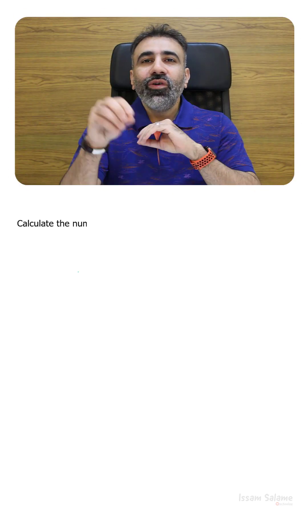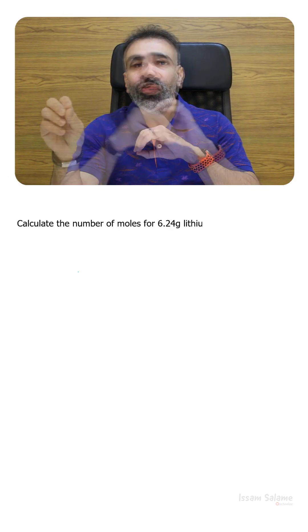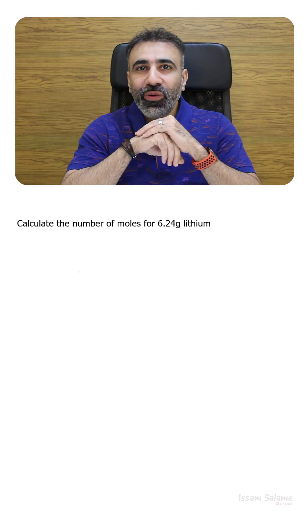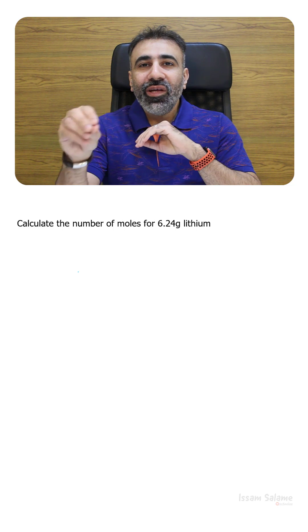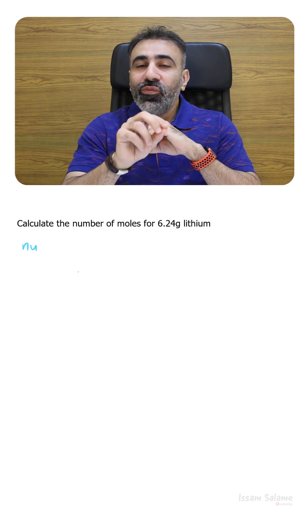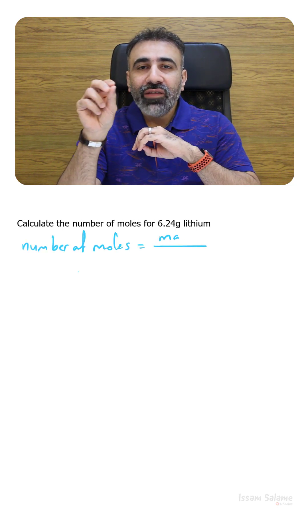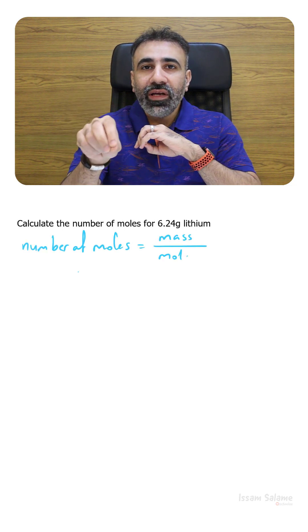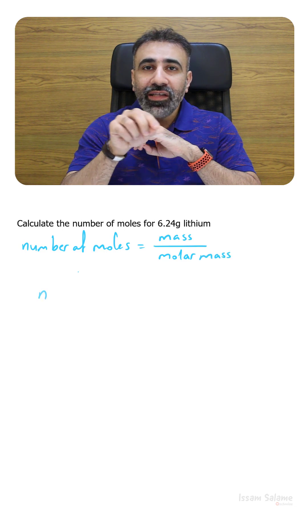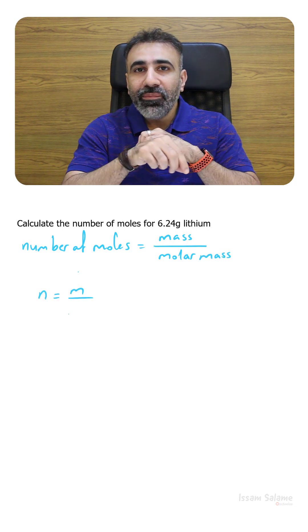Calculate the number of moles for 6.24 grams of lithium. Here we have to use the formula: number of moles is equal to mass divided by molar mass, or N is equal to M divided by MM.